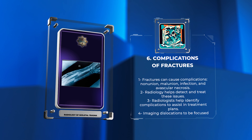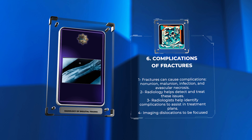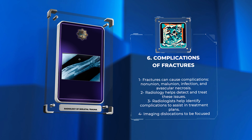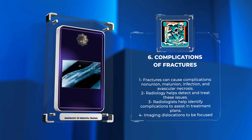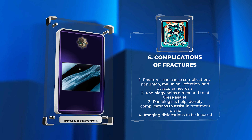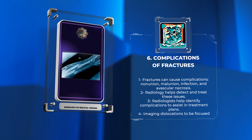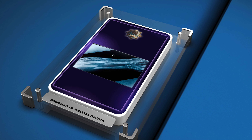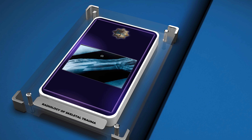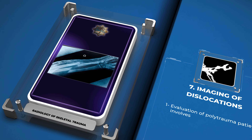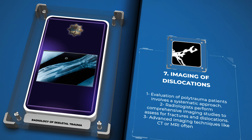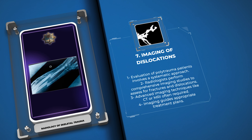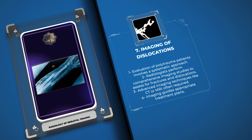Next, we will explore the radiographic evaluation of fractures. Radiographs are often the initial imaging modality used to evaluate fractures. They provide essential information regarding fracture location, displacement, angulation, and comminution. Standard radiographic views include anteroposterior, lateral, and oblique projections. Additional views, such as stress views, may be needed to assess for subtle injuries or potential ligamentous involvement. Radiographic assessment must be thorough and meticulous to ensure accurate diagnosis and appropriate treatment planning.